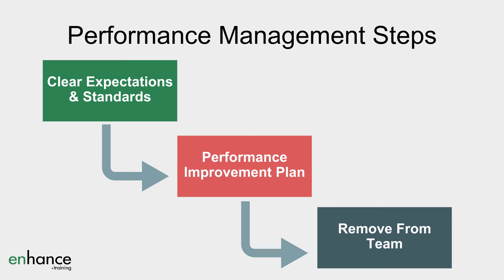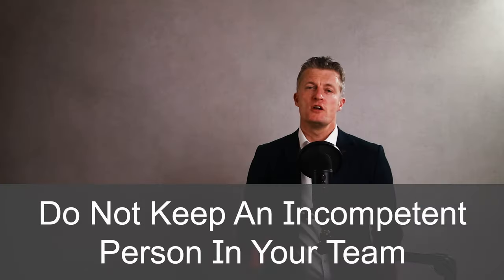The steps in performance management would typically be: firstly, to set really clear expectations and performance standards in writing; secondly, to start a performance improvement plan (PIP) to formally set expectations and enable formal assessment of performance. Undertaking a PIP is as much about managing the perceptions of the team that you keep as it is about removing an underperformer. And third, if they fail the PIP, start a disciplinary process as needed, leading to them being removed. Do not keep an incompetent person in your team — doing so is toxic for your management career and for team and business performance. Fairly and nicely remove the individual as quickly as possible.